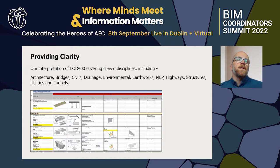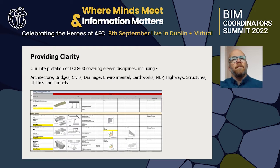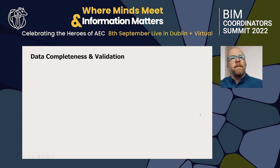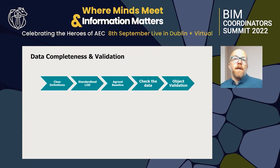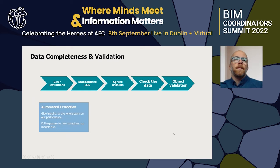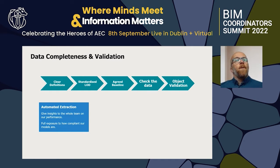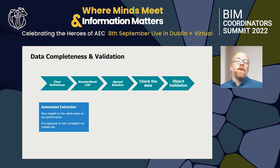There are lots of other things we can do from this. It's not just about having consistency in how we model — there are lots of other downstream processes this information can be used for. We now have a set of clear definitions, a standardised LOD, and an agreed baseline. We're able to check the data, validate any objects that we've modelled, automate extraction from our 3D models, give insights to the whole team on performance, and expose how compliant our models are.